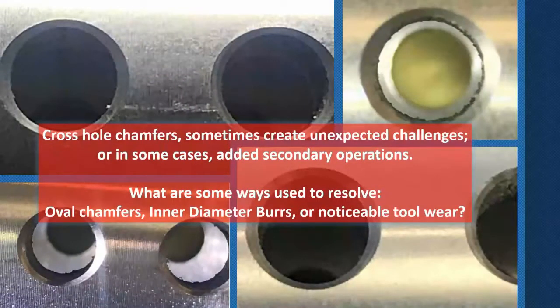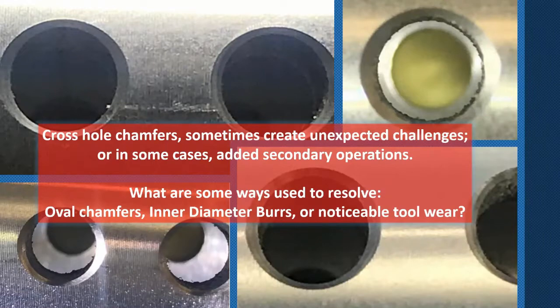Cross hole chamfers sometimes create unexpected challenges or added secondary operations. What are some ways used to resolve oval chamfers, inner diameter burrs, or noticeable tool wear? When you chamfer an OD hole, you're always left with an egg-shaped chamfer that's deeper on the ends at the higher point of the diameter and narrower on the sides. This is where 3D chamfering really shines because it is able to produce a uniform chamfer all the way around the part with very minimal programming.